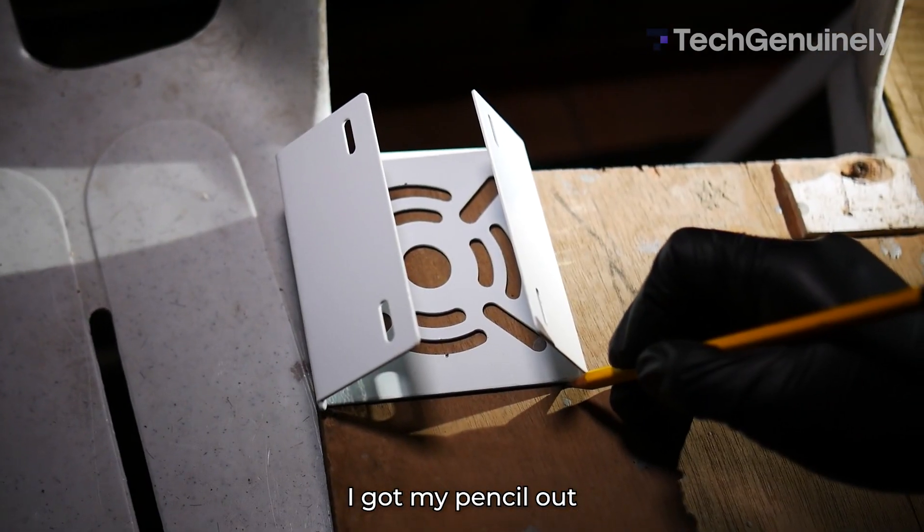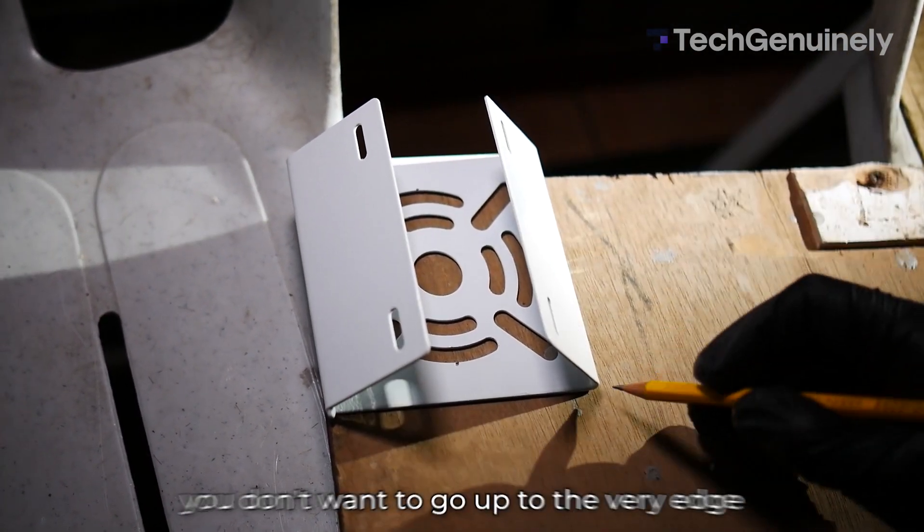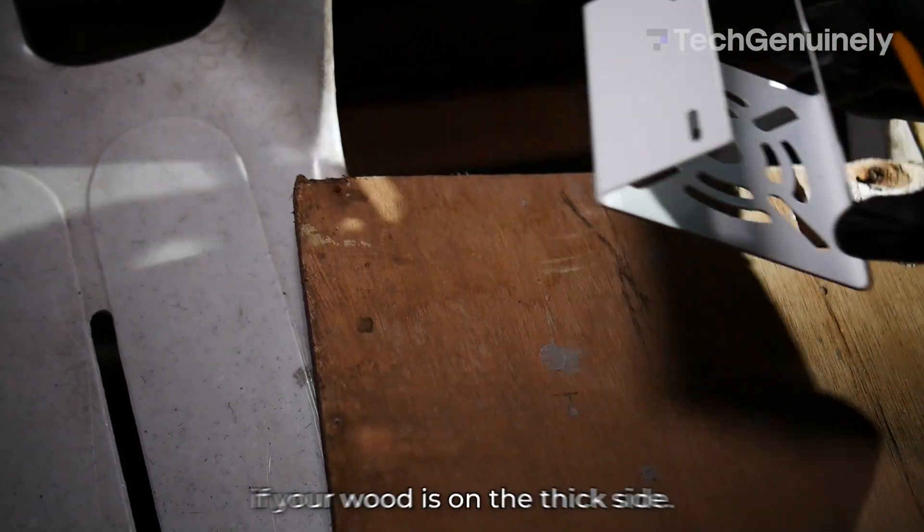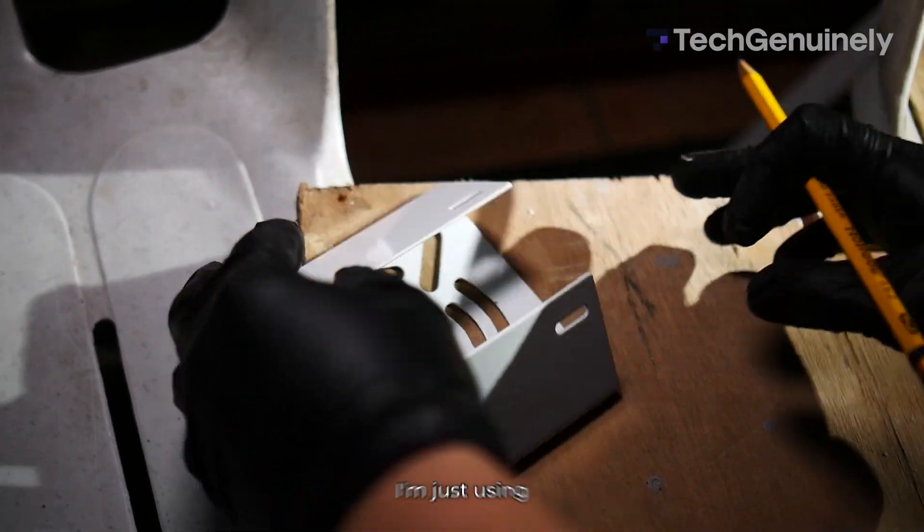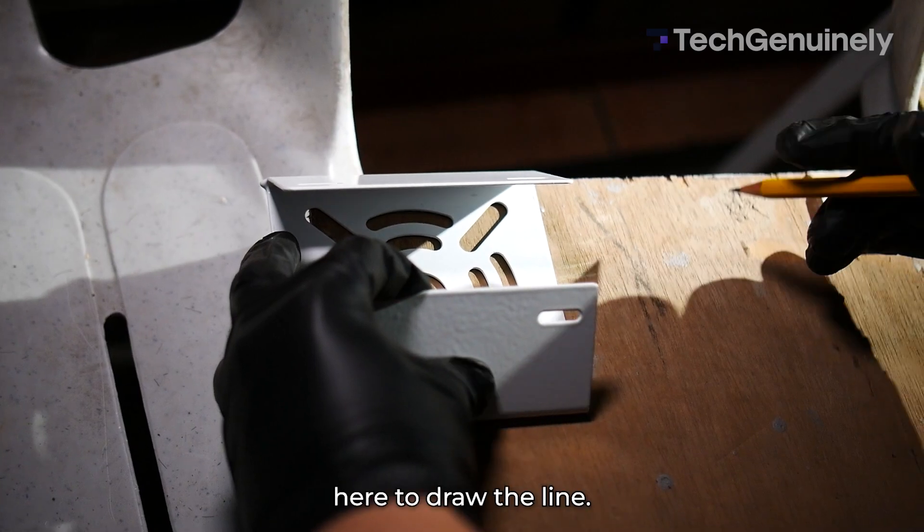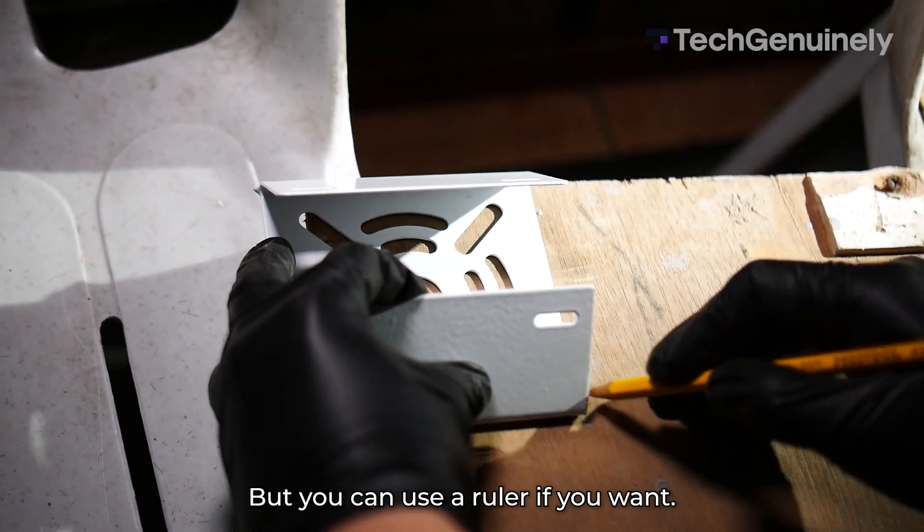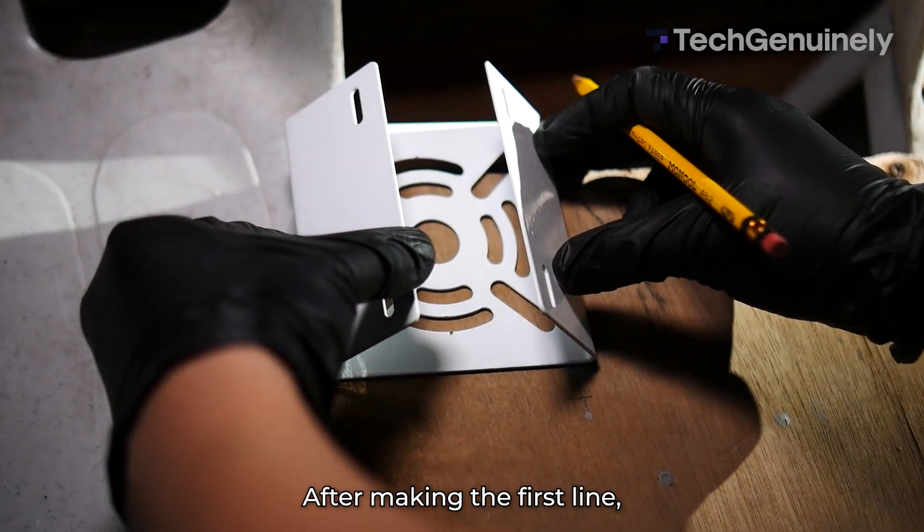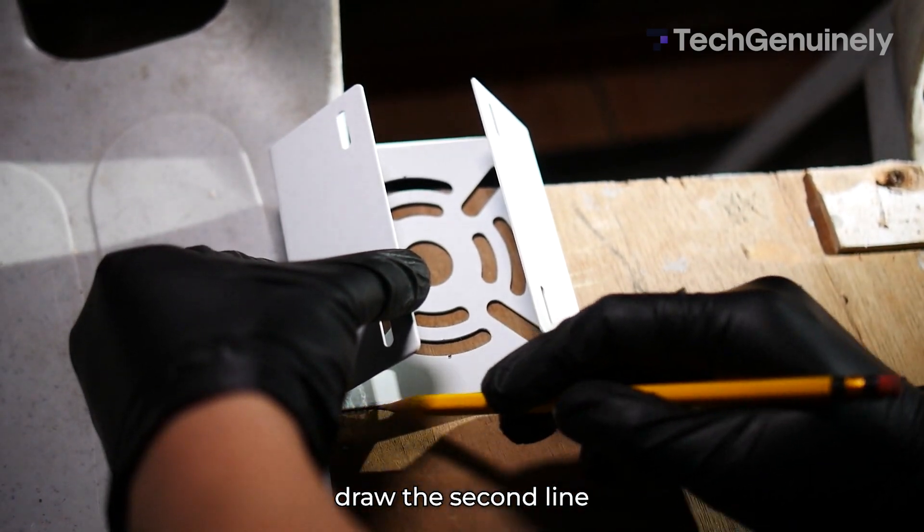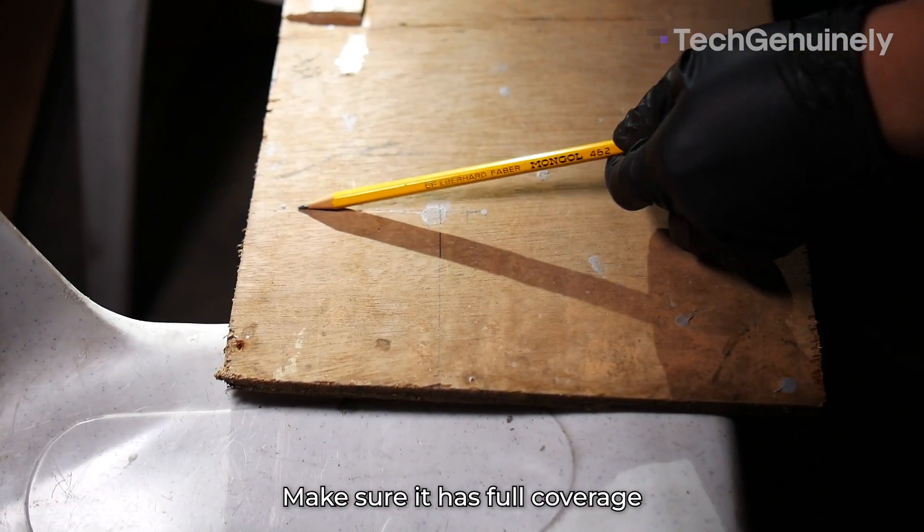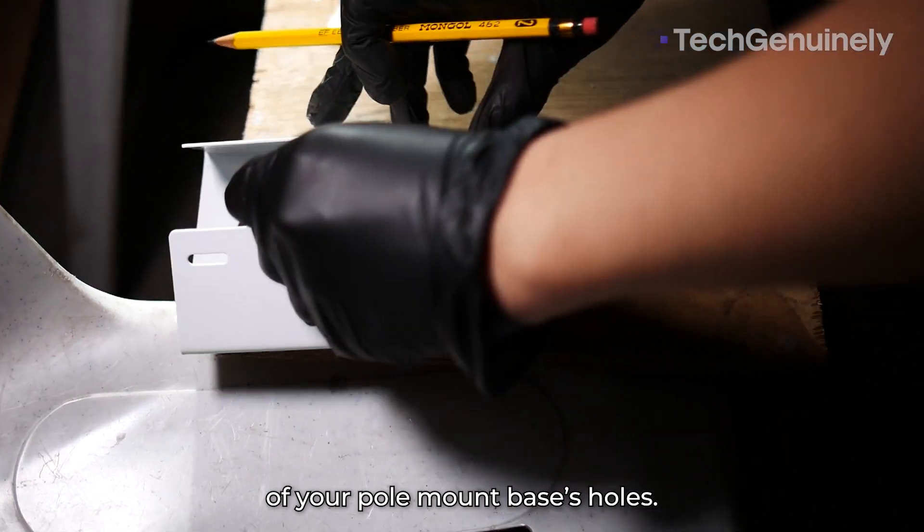At this point, I got my pencil out and marked where I'd cut. Remember that you don't want to go up to the very edge if your wood is on the thick side. I'm just using the straight edge of the mount here to draw the line. After making the first line, draw the second line you'll use as a cutting guide. Make sure it has full coverage of your pole mount base's holes.